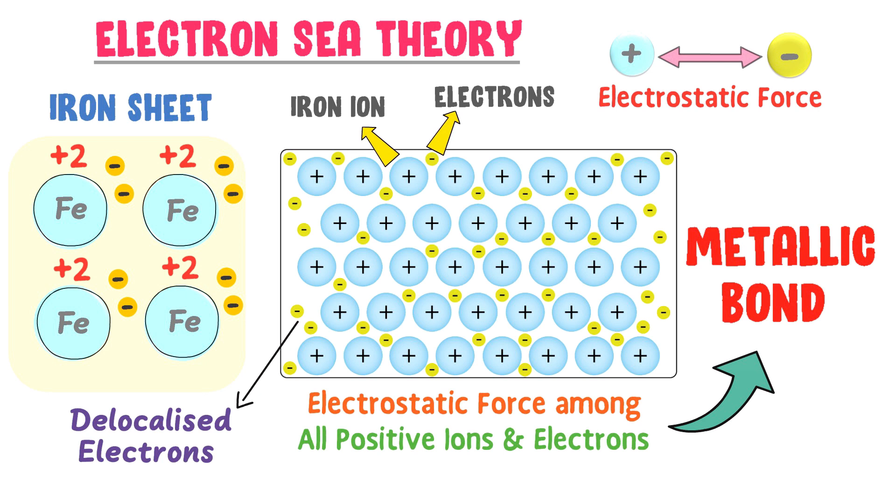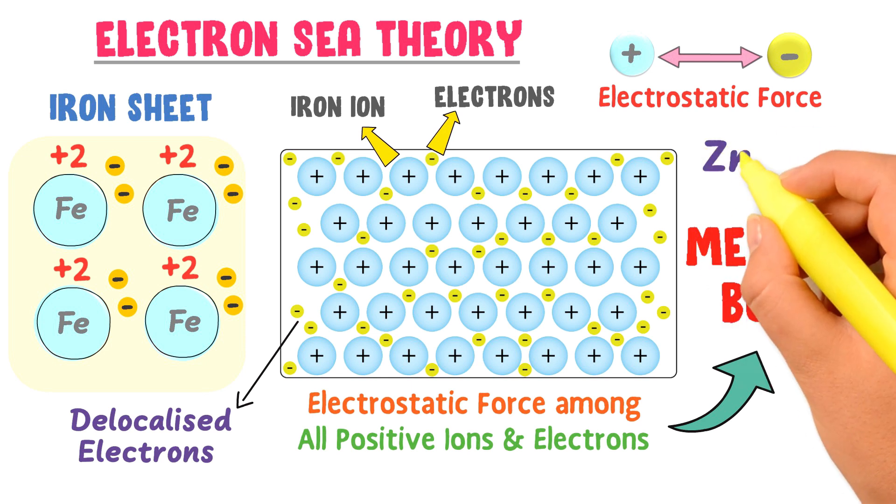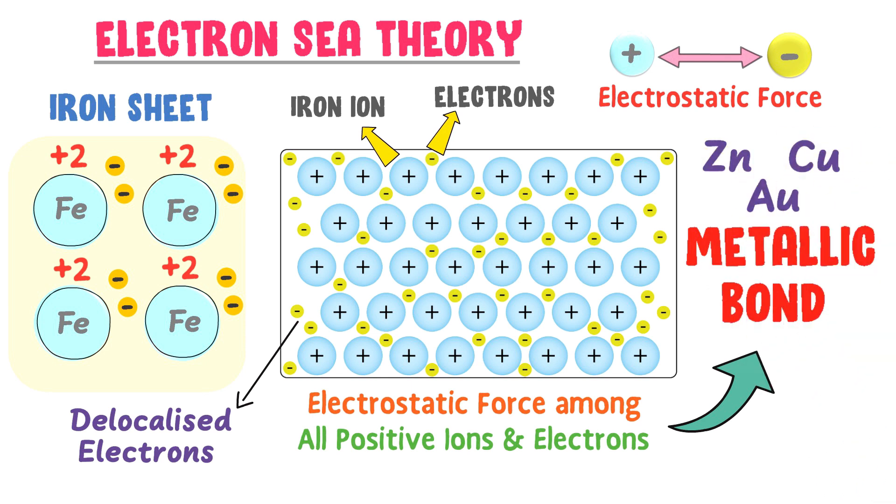Metallic bonds exist in all metals like zinc, copper, gold, etc. Therefore, remember that metallic bond is formed due to the electrostatic force between sea of electrons and positive ions.